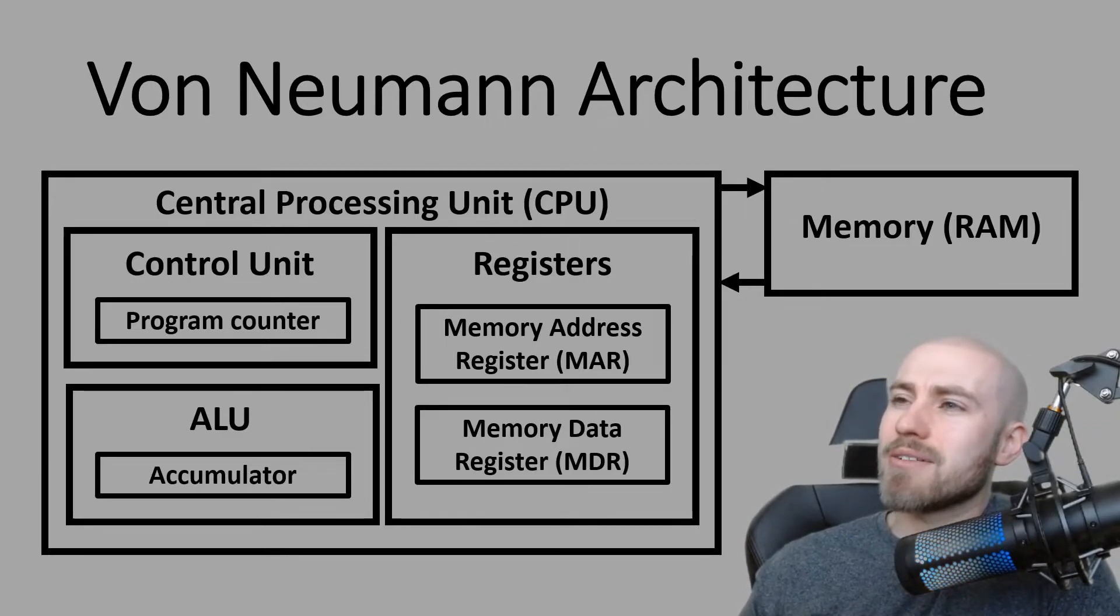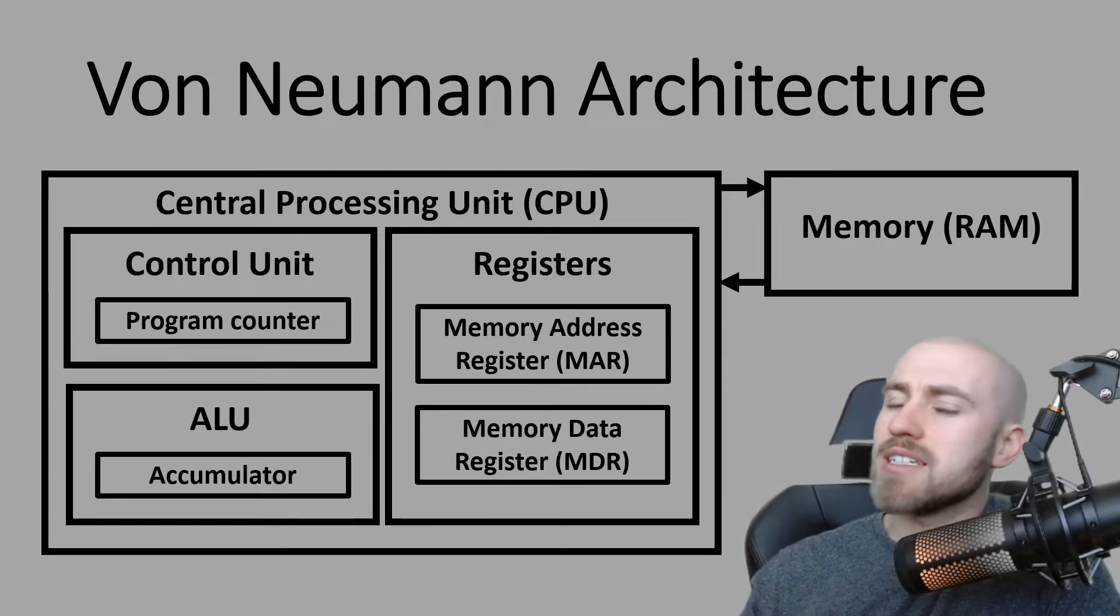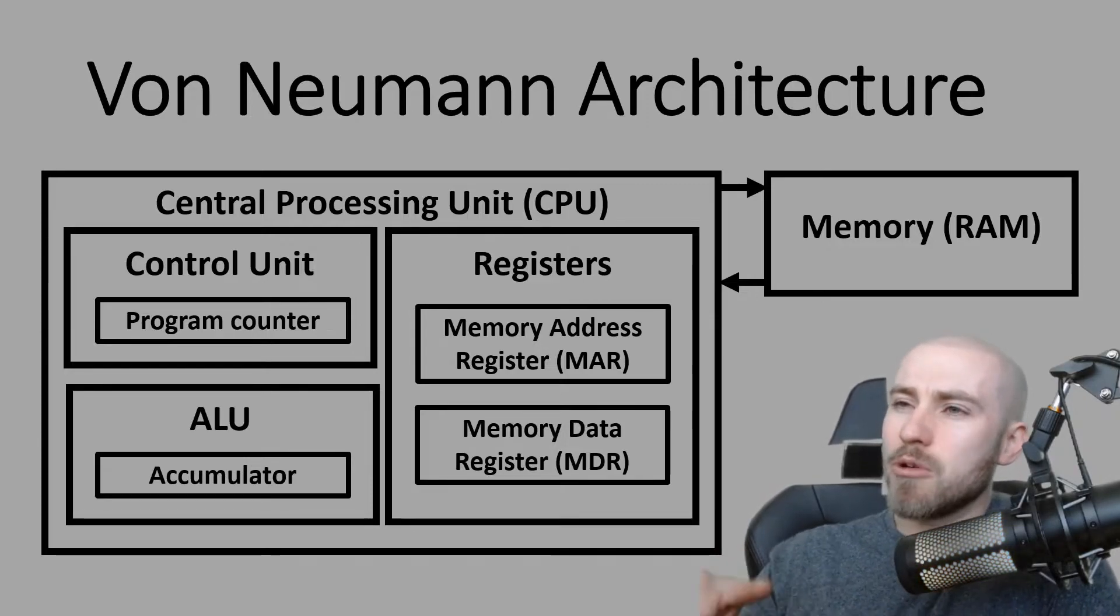Now the other parts that you can see in this diagram are the registers, which will actually help this process take place. So the program counter keeps track of what instruction that it's up to and will just increase every FDE cycle that's carried out. And it will pass that number to the memory address register. So let's say it was instruction number one. It will pass that number one to the memory address register.